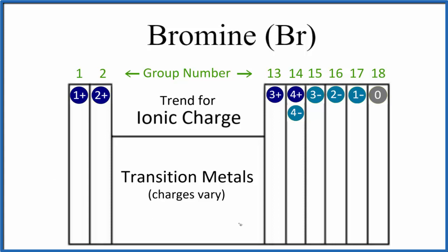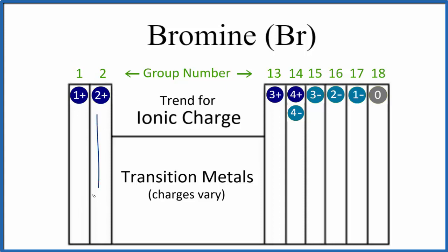We can look at this generalized periodic table to figure that out. Group 1 — all of those elements form ions with a 1 plus ionic charge. Group 2 are 2 plus, 3 plus, 4 plus, and so on.